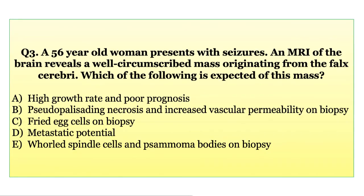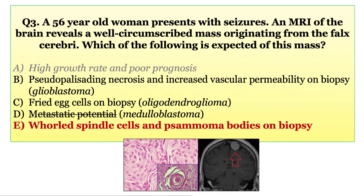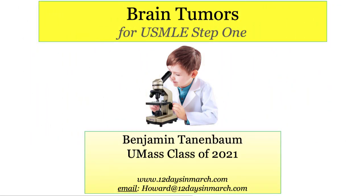Question 3: A 56-year-old woman presents with seizures. MRI reveals a well-circumscribed mass originating from the falx cerebri. Which of the following is expected — high growth rate and poor prognosis, pseudopalisading necrosis on biopsy, fried egg cells on biopsy, metastatic potential, or whorled spindle cells and psammoma bodies on biopsy? The answer is E. Meningiomas have whorled spindle cells with psammoma bodies. They are benign and slow growing, making A wrong. B describes GBM, C describes oligodendroglioma, and medulloblastomas are the only brain tumors with notable metastatic potential. This concludes this special neurology edition of 12 Days in March.